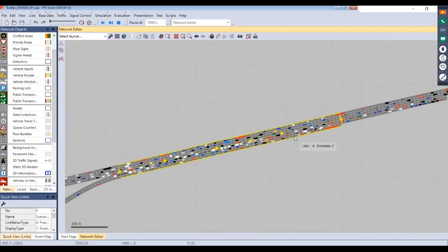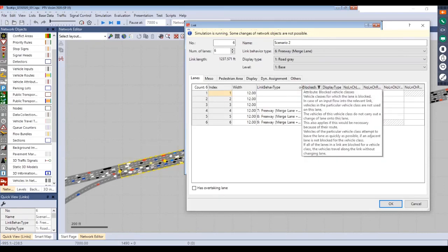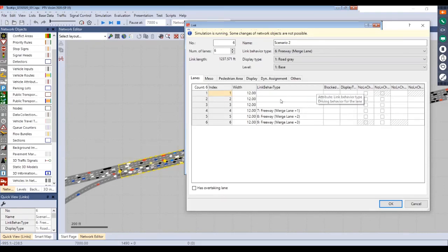And then for scenario two, here's where we applied some of those different link behavior types.